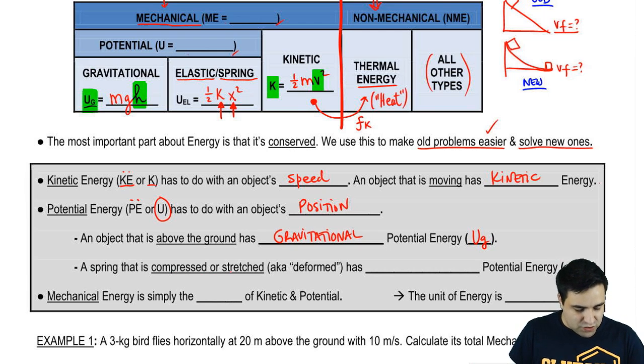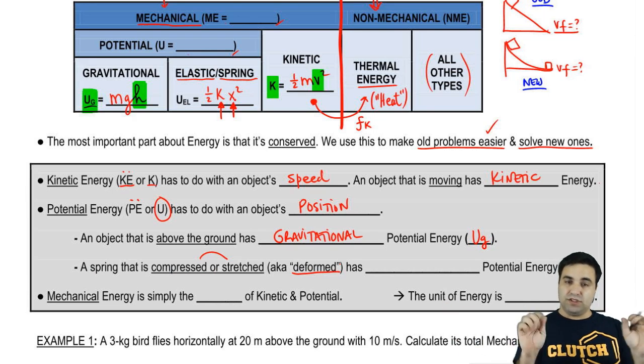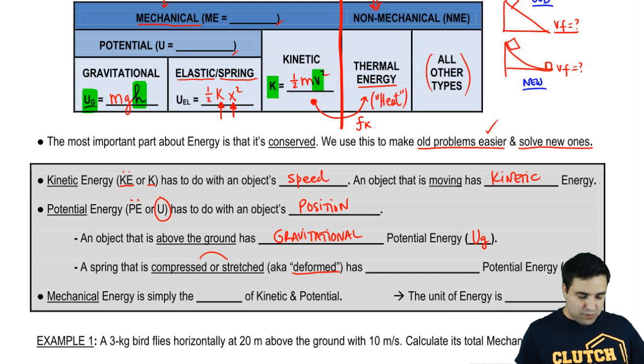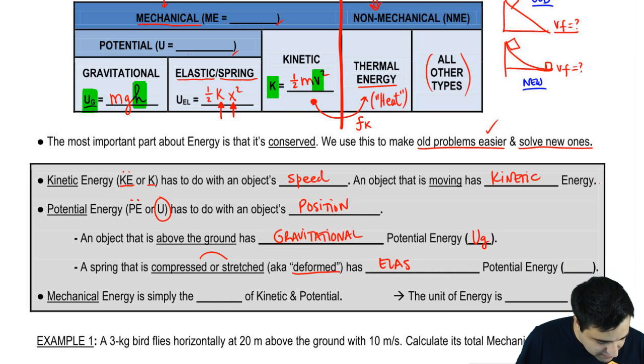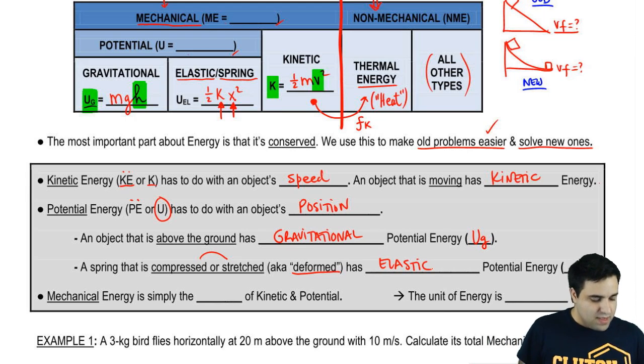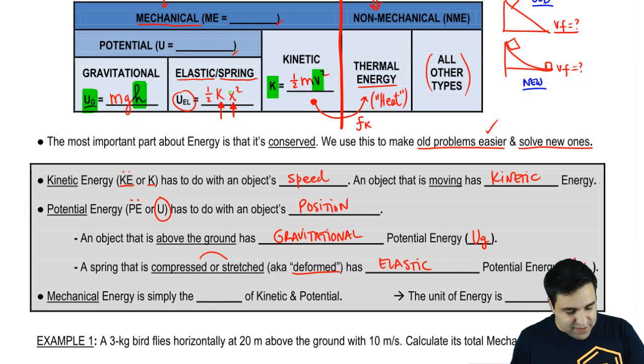A spring that is compressed or stretched, both of these terms could be referred to as deformed. A deformation is you stretching or compressing a spring. So a spring that is deformed has elastic potential energy. And that's going to be U sub EL right here. X is deformation. If you have an X, you have a U EL.